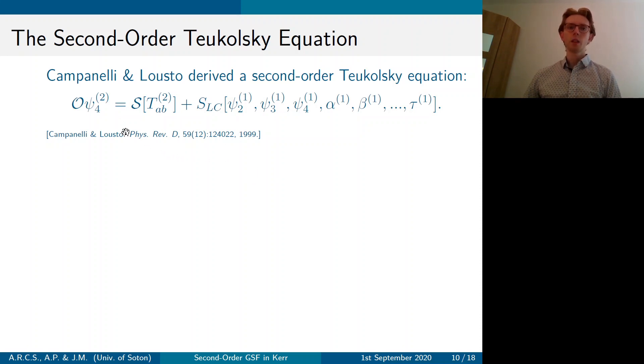Derived by Campanelli and Lousto in this form is similar to the Teukolsky equation, except for it's acting on psi 4 2 now, the second order perturbation to psi 4. And this results in an additional source term sourced by the first order metric perturbation.